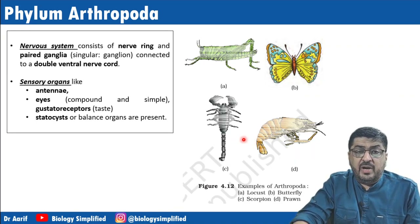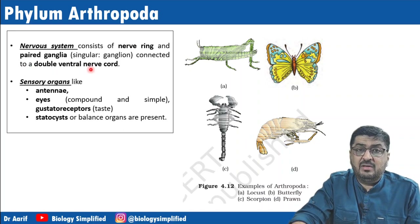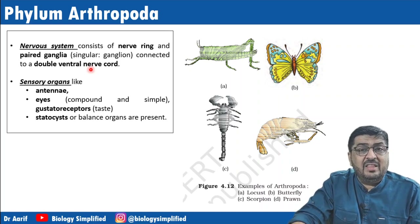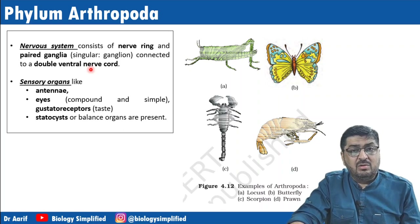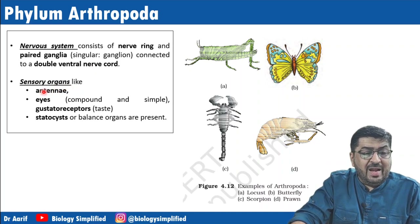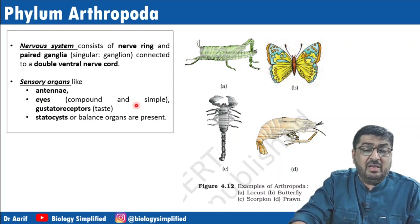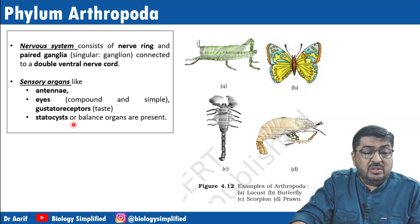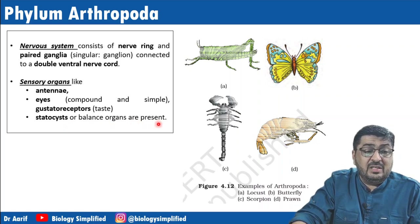The nervous system, as already studied in cockroach, consists of a nerve ring and a double ventral nerve cord. In cockroach there were six ganglia in the abdomen. Sensory organs include antenna and eyes — they could be compound or simple; in cockroach we studied compound eyes made of ommatidia. Gustatory receptors for taste and statocysts or balance organs are also present.